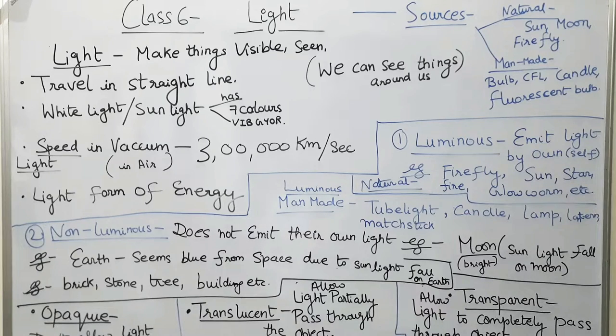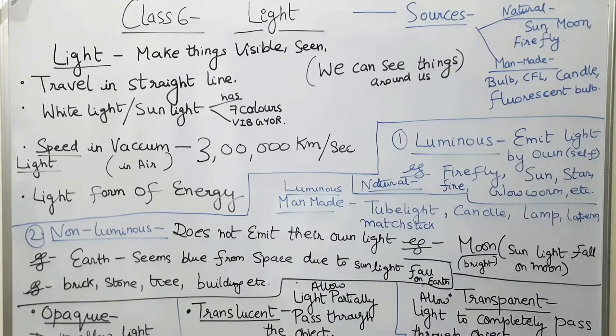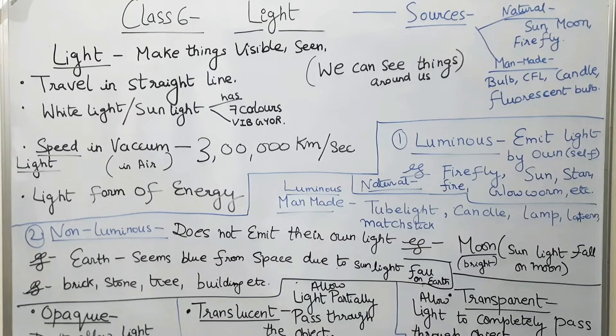Light travels in a straight line. If some object interferes, it will change its path.